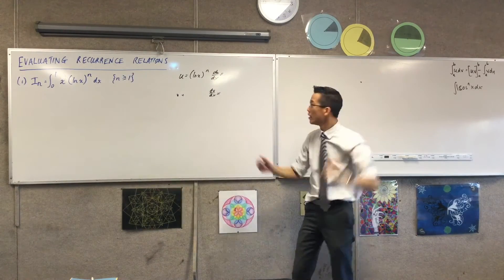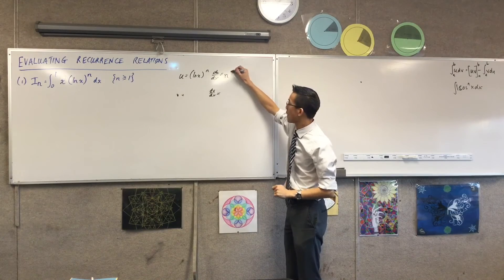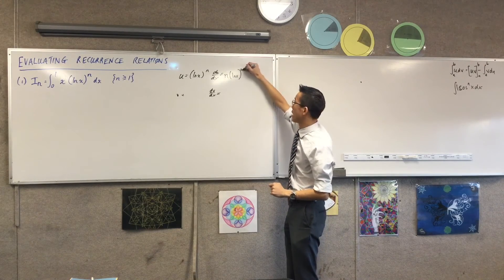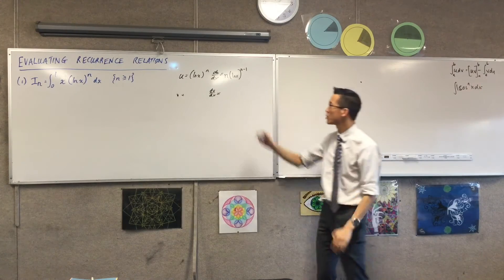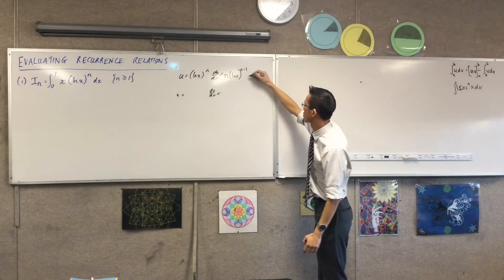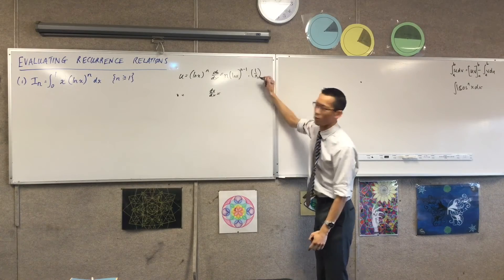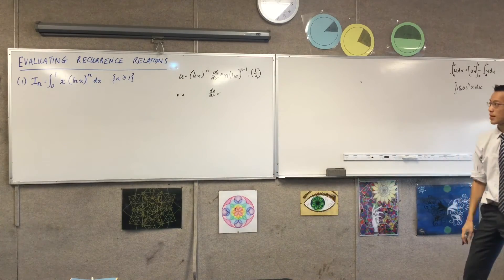If I do the outside first, it's just something to a power. So I'm going to bring the power down the front, reduce the power by 1, that was the outside. Now I should do the inside, which is 1 on x. So I'm just going to write that like so, and I could write an overall x but you'll see it's going to cancel anyhow.